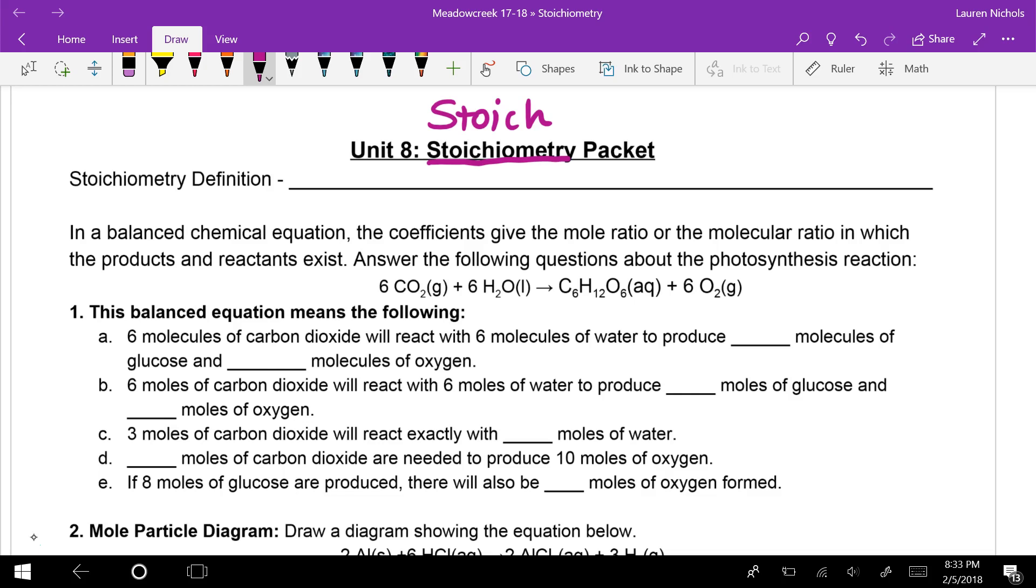Now, we need to know what this word is in order to know what we're supposed to be learning. So a basic definition is a study of the relationships between compounds in a balanced chemical equation. Key word being balanced.